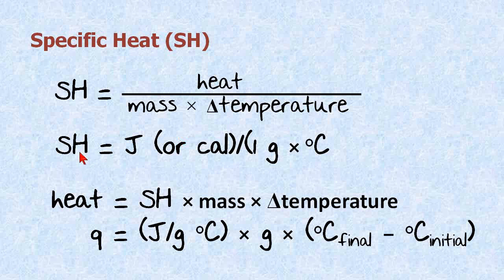So when we look at the specific heat units through dimensional analysis, it can be joules or calories. We'll typically use joules per gram degree C. And if we rewrite the equation, heat is equal to specific heat times mass times the change in temperature. And Q is equal to joules per gram degree C times grams times the final temperature minus the initial temperature, which is the change in temperature. And it works out to be heat in joules.